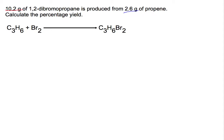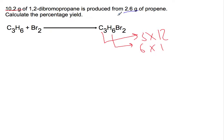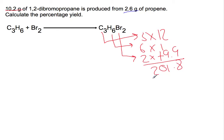First of all we're going to calculate the gram formula mass of our product, 1,2-dibromopropane. If we add all of that together we get a gram formula mass of 201.8, which we'll need to use later on.